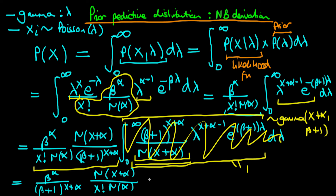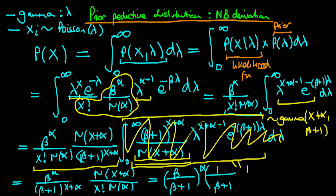We can rewrite this first beta term as beta over beta plus 1, raised to the common power of alpha, times 1 over beta plus 1 all to the power x. That gives exactly this first term to the left of our parenthesis.